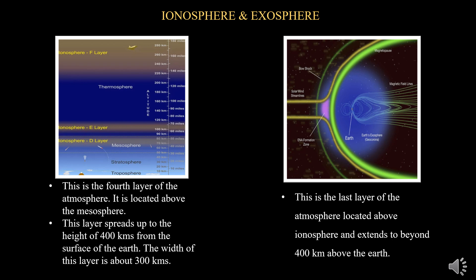The exosphere is the last layer of the atmosphere, located above the ionosphere. It extends beyond 400 kilometers above the earth. Gases are very sparse in this sphere due to the lack of gravitational force; therefore, the density of air is the least in the exosphere.